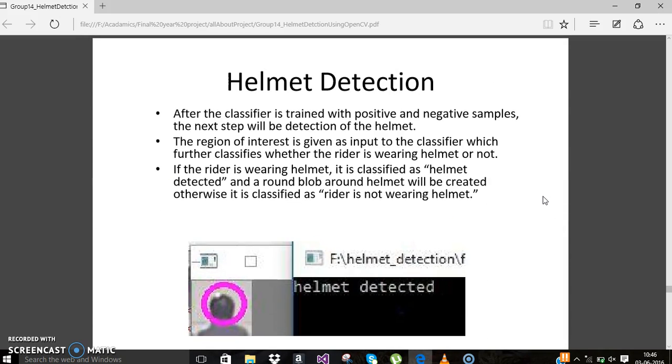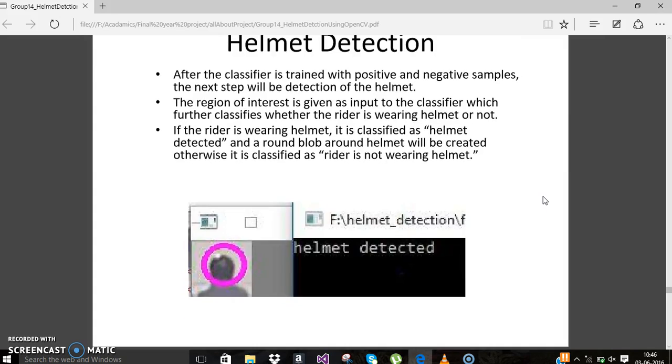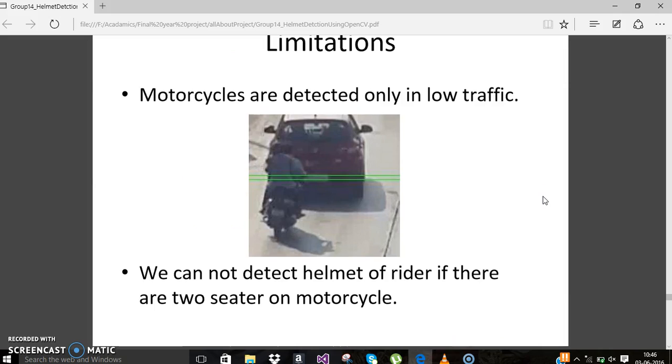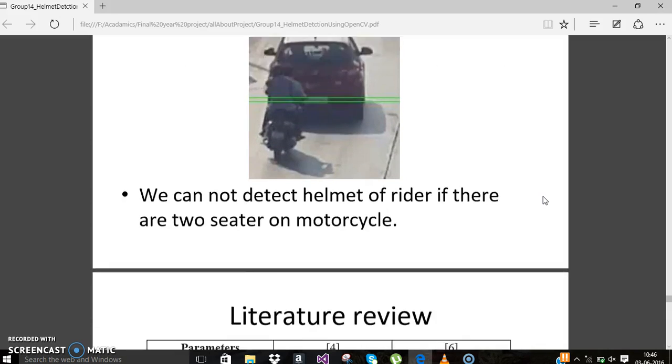Here you can see we have successfully detected a helmet. The limitation of our project is that if the motorcycle is behind something else, we are not able to detect the helmet, and we cannot detect a helmet of the rider if there are two seated on the motorcycle.